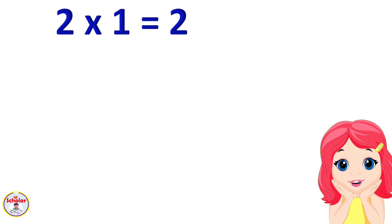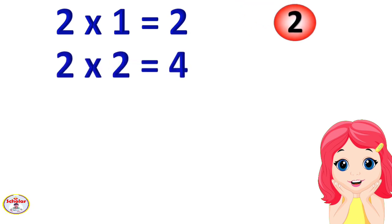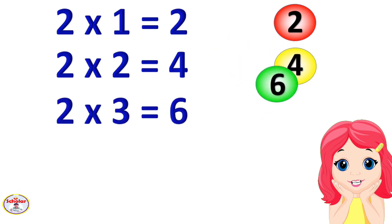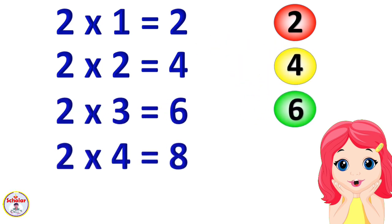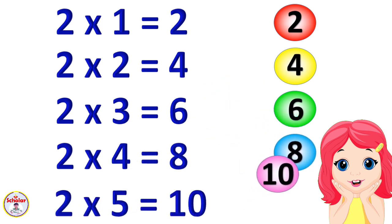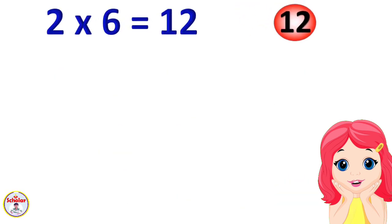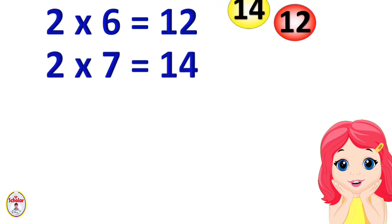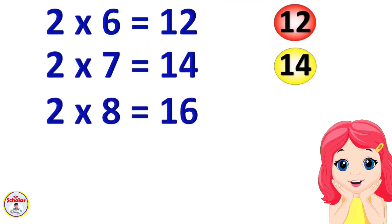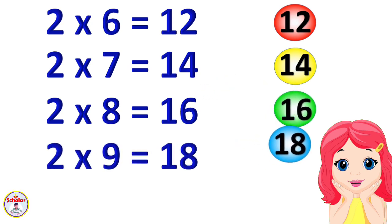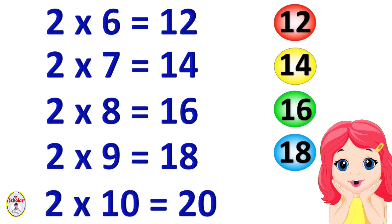Table of 2. 2×1=2, 2×2=4, 2×3=6, 2×4=8, 2×5=10, 2×6=12, 2×7=14, 2×8=16, 2×9=18, 2×10=20.